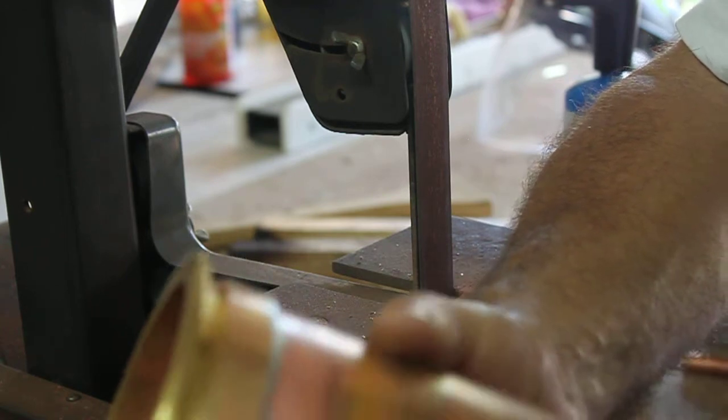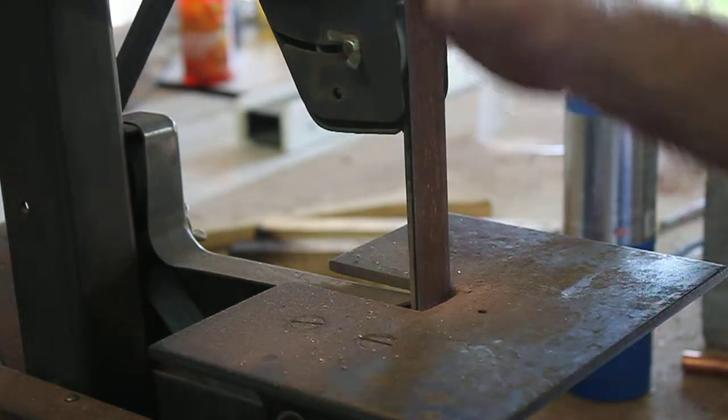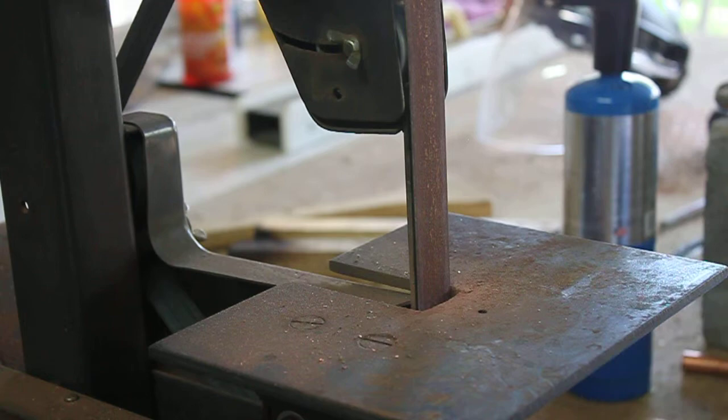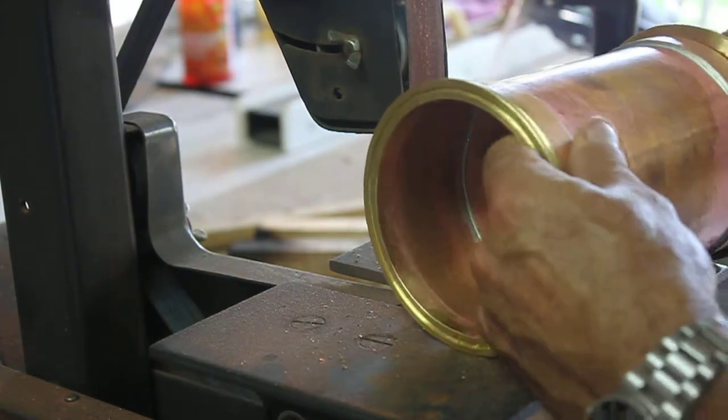Typically how I do that is I'll bring it over to my blade sander and just run that thing on the edge. I do not put this thing square on there - I put it at an angle a little bit.